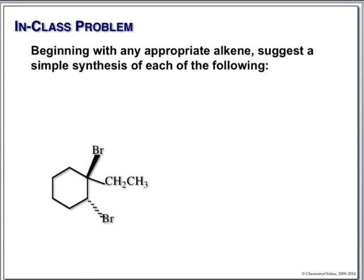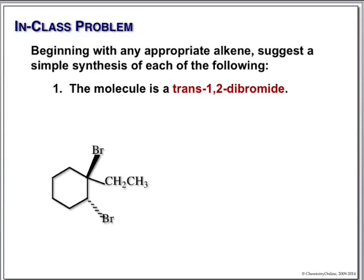Look at this next product and ask: what is it? It's a 1,2-dibromide, and the stereochemistry is trans. There's only one way to make trans-1,2-dibromides. Draw the appropriate alkene and put in your reaction conditions. These carbons must have been alkene carbons. So we simply need a double bond there, show the ethyl group, and put bromine in carbon tet as our reaction conditions.